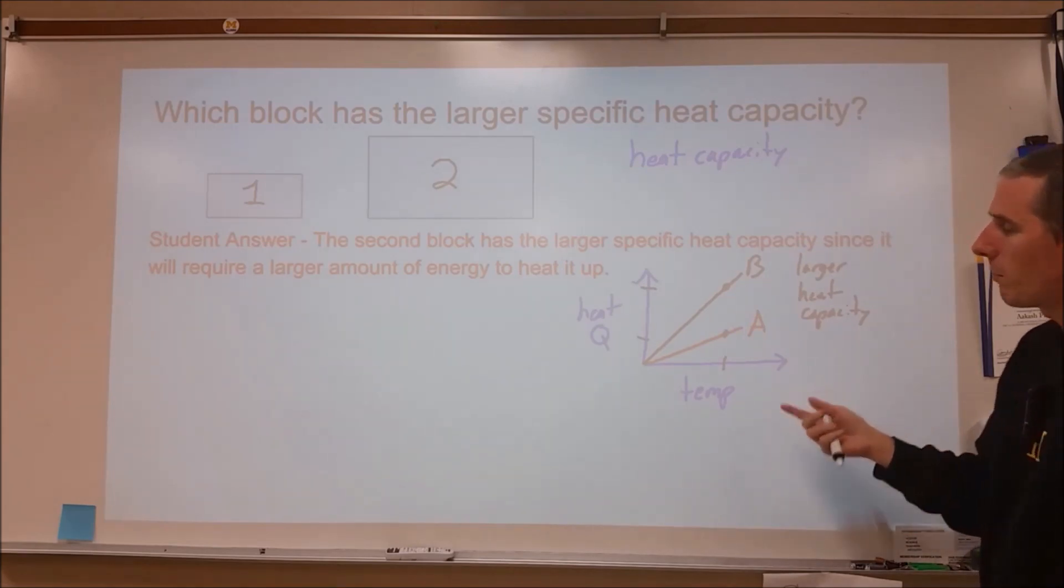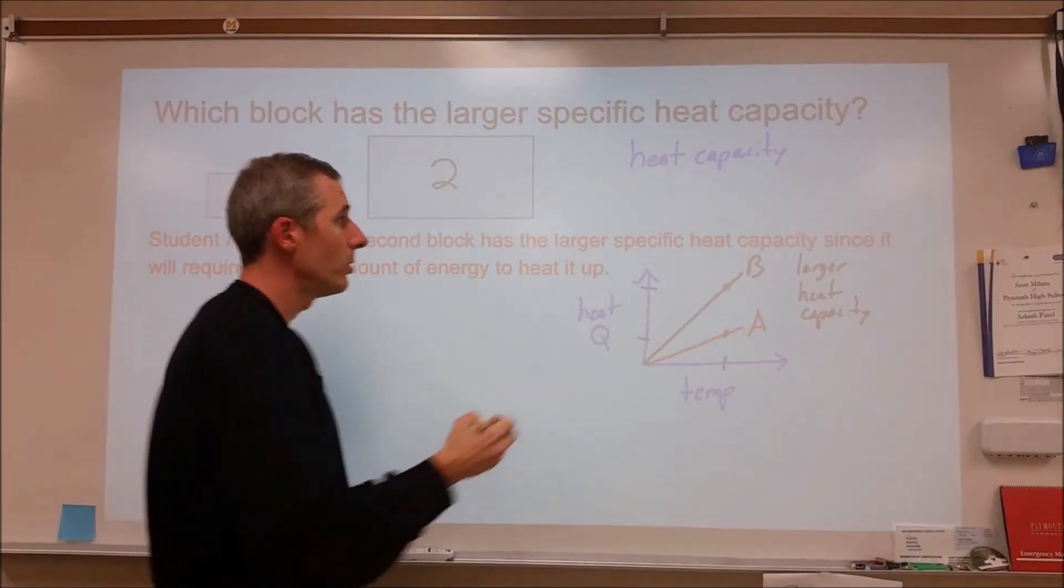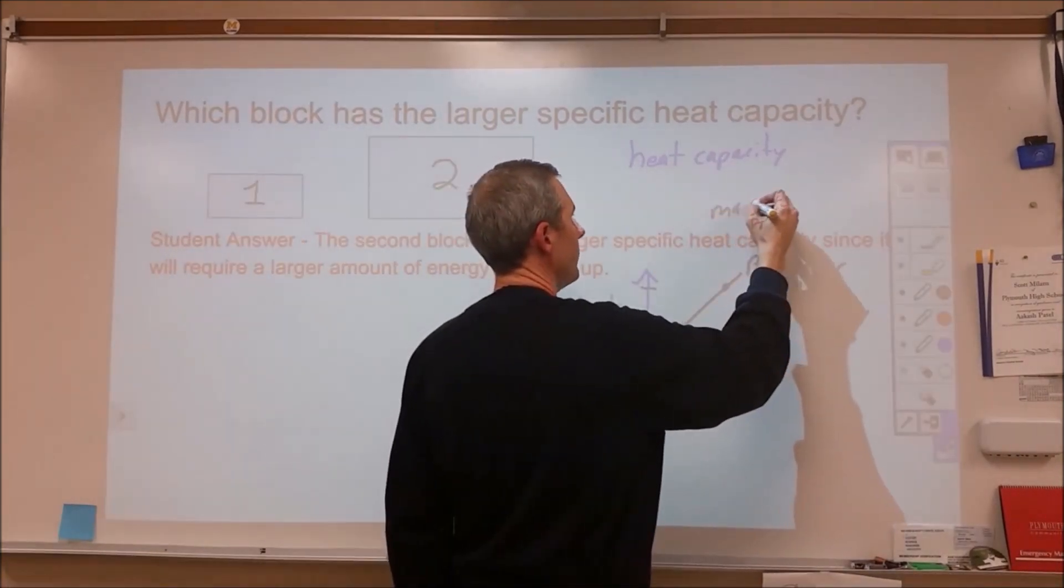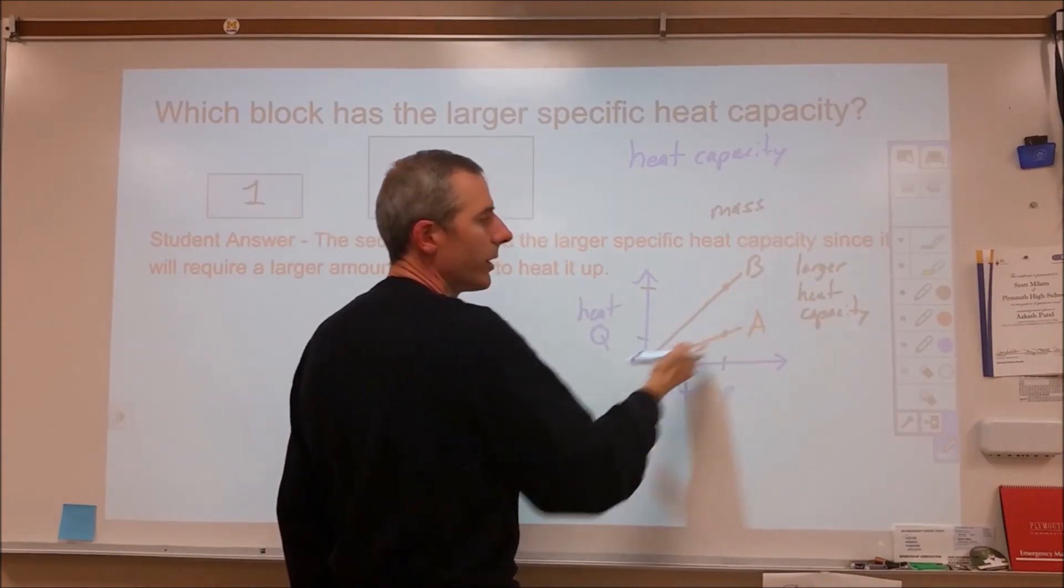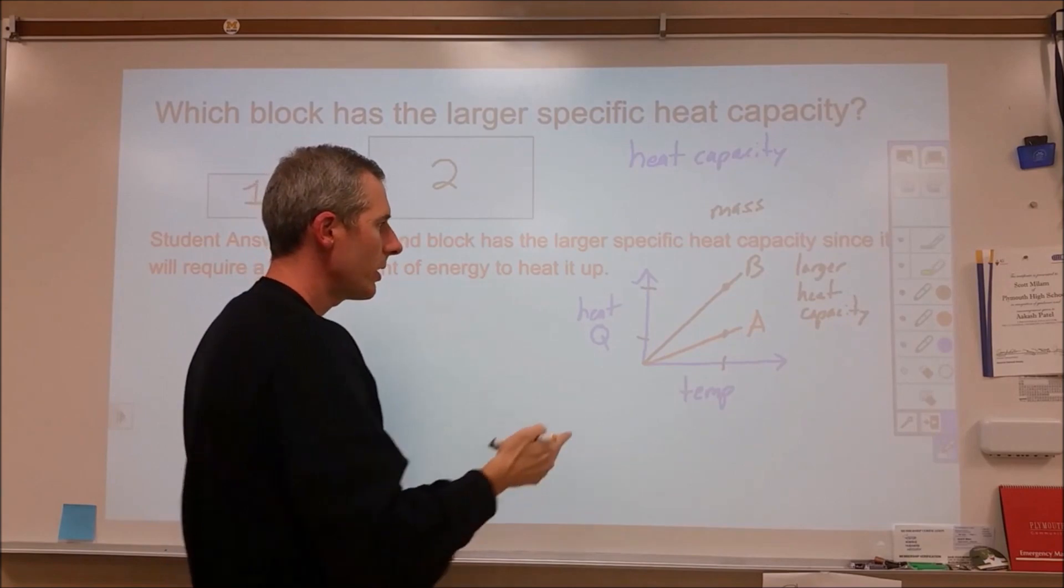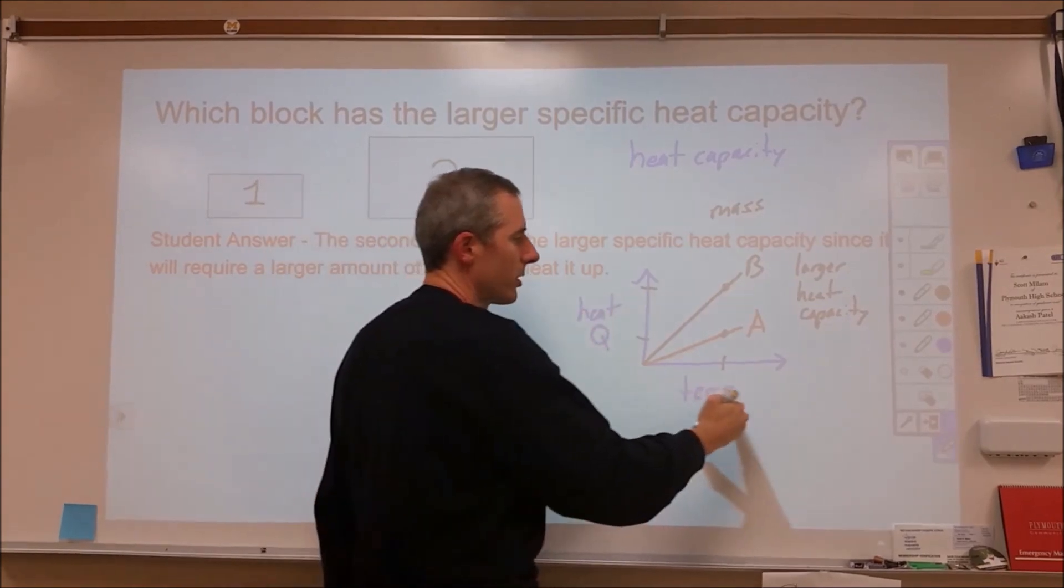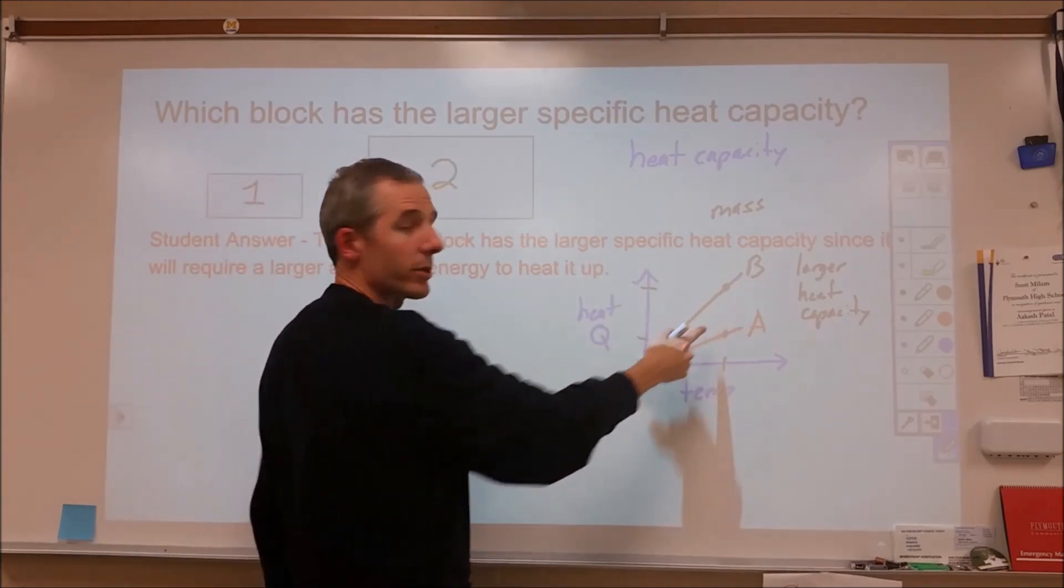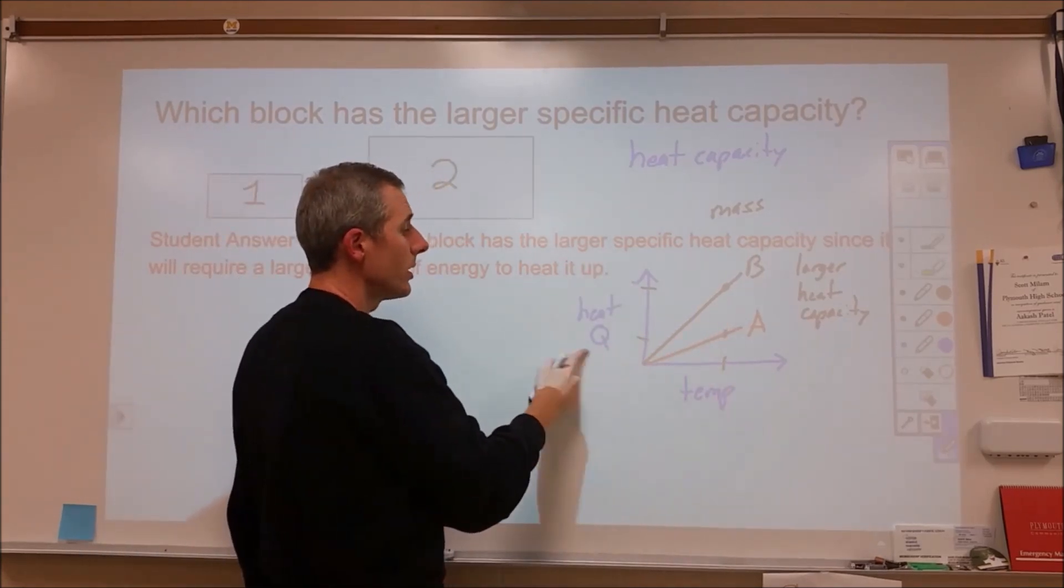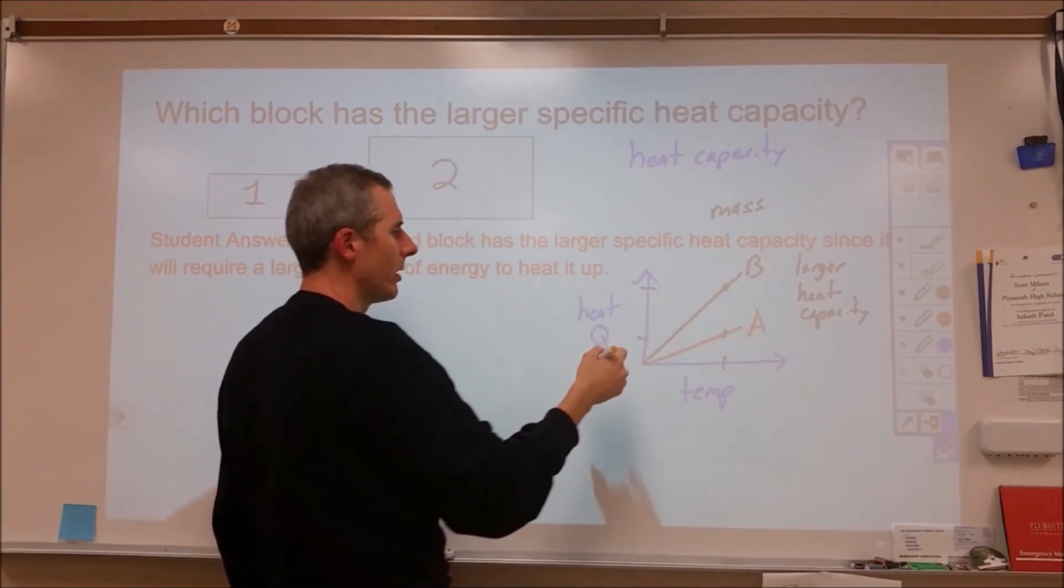Part of that is the amount of substance, which we'll usually use mass for. So the slopes of these lines are the heat capacities. Heat capacity is a ratio of how much heat is transferred to the substance versus how much the temperature changes. We could use the slopes of these lines to give us information about the heat capacity.